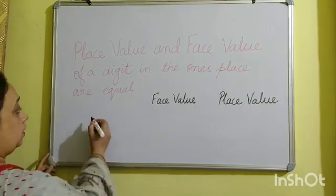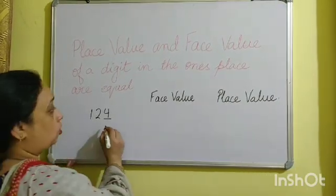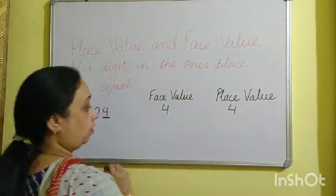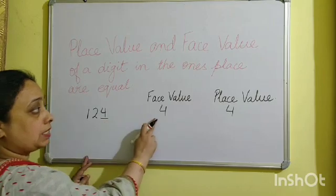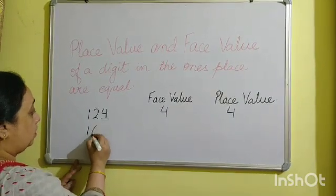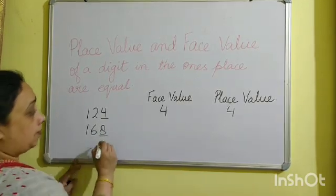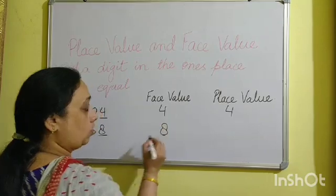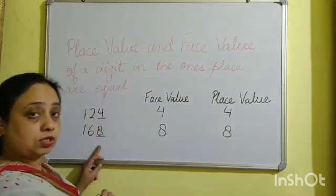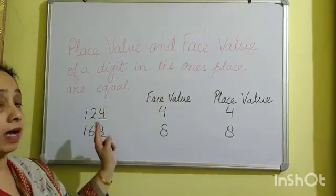Suppose I have the number 124. The digit in the ones place is 4. The face value of 4 is 4 and the place value of 4 is also 4, since 4 is in the ones place. For 168, the digit in the ones place is 8. The face value of 8 is 8, and the place value of 8 is also 8 because it is in the ones position. So the place value and face value of a digit in the ones place are equal.